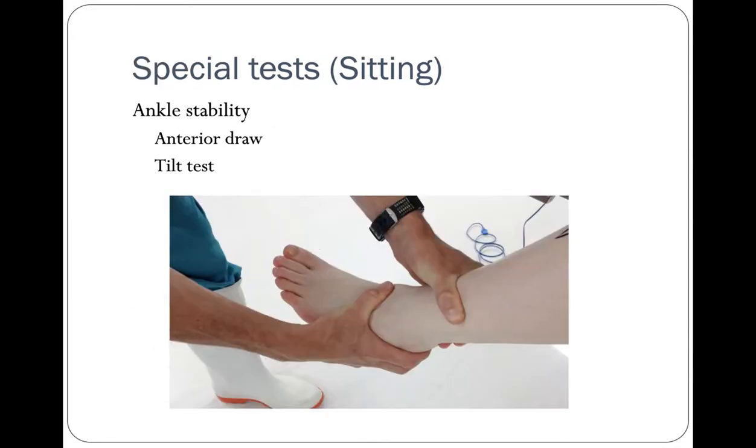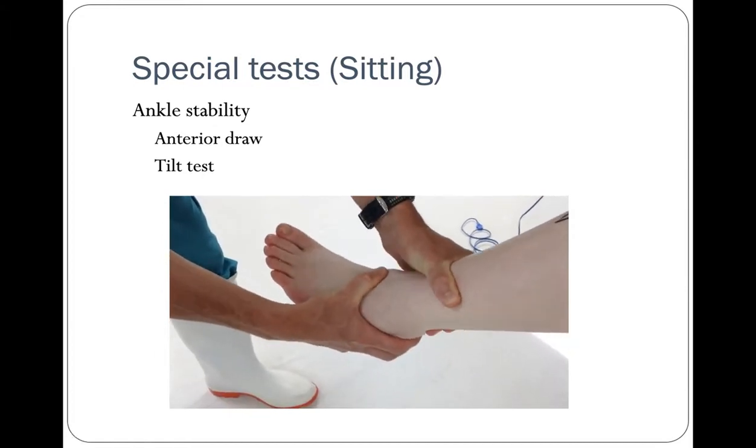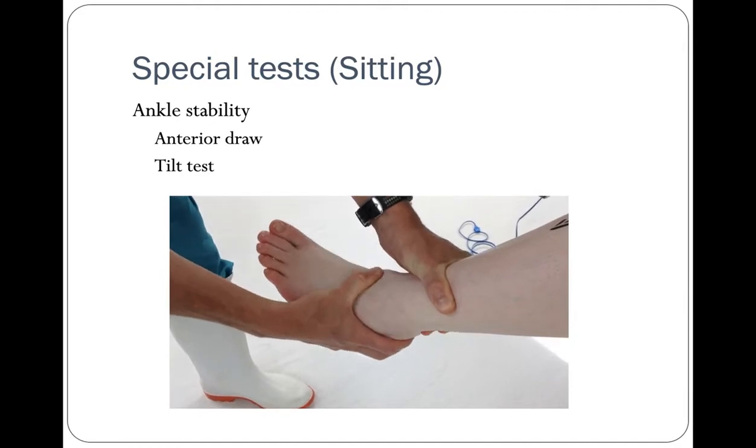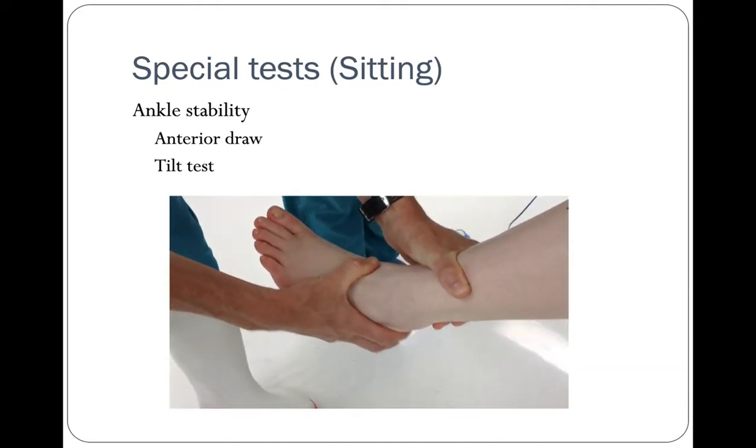There are some special tests. One is the test for anterior ankle instability. The anterior talofibular ligament is the main ankle stabilizer. This is tested using performing the drawer test, as you can see in this video. Grab the tibia with one hand, hold the neck of the talus and the calcaneus with the other, and pull the ankle forward with the ankle in about 30 degrees of plantar flexion.